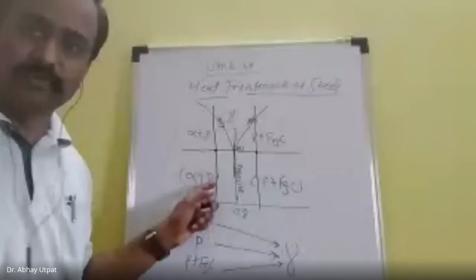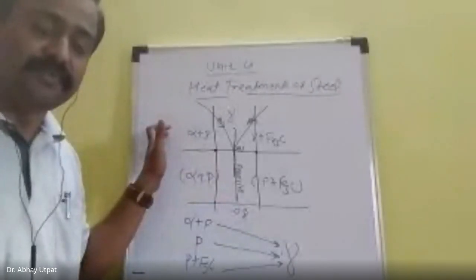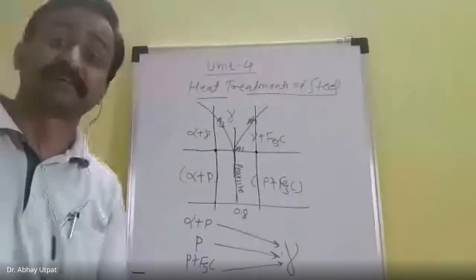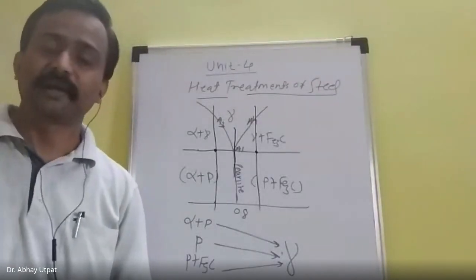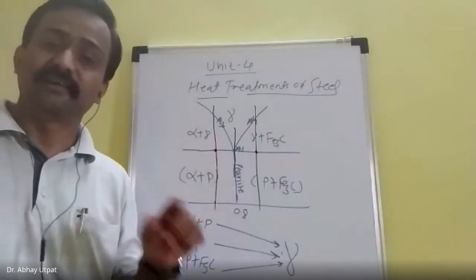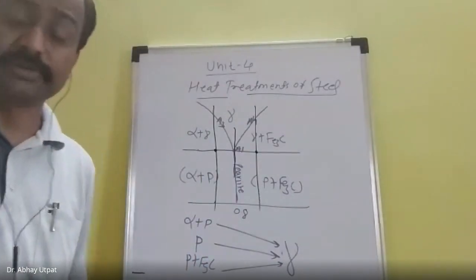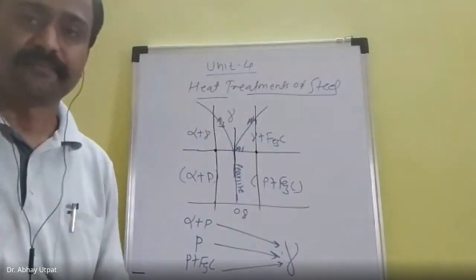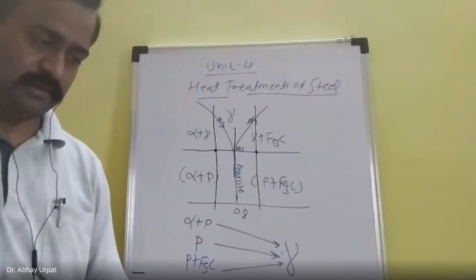Now recall the definition of A3 temperature from the iron-iron carbon diagram. The A3 temperature is the temperature at which the last part of ferrite is converted to 100% austenite. Please see the diagram. In the alpha plus gamma region, as you go on heating, pearlite converts into austenite but ferrite remains ferrite. As you continue heating, you get more and more FCC, but not yet 100% FCC.